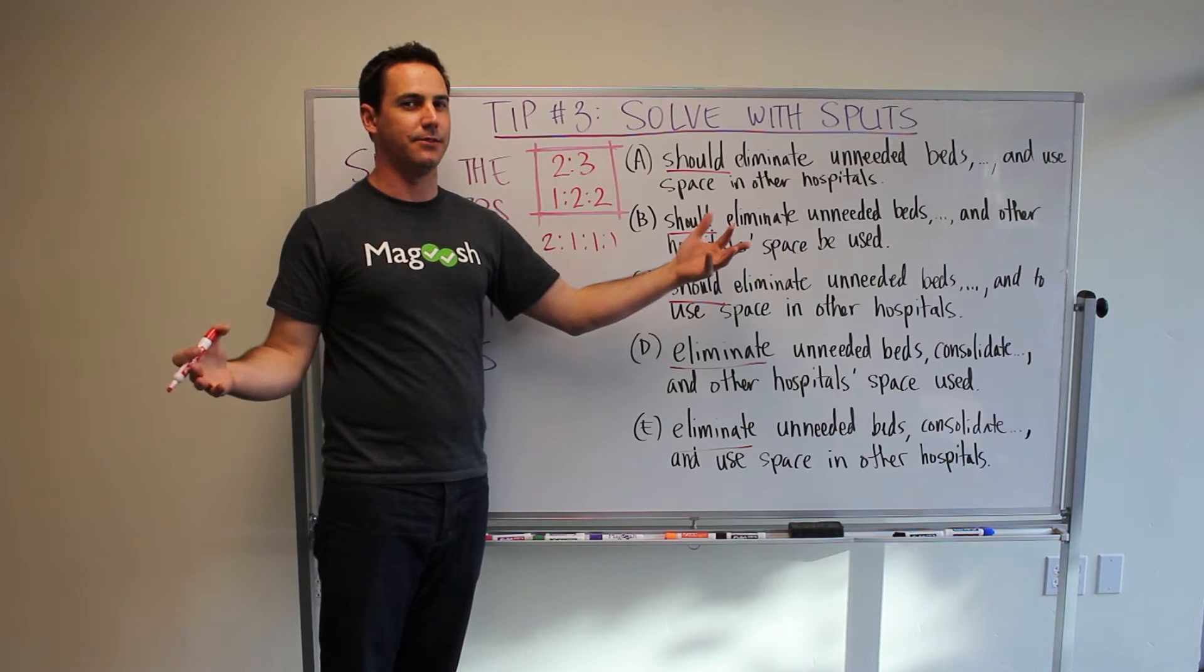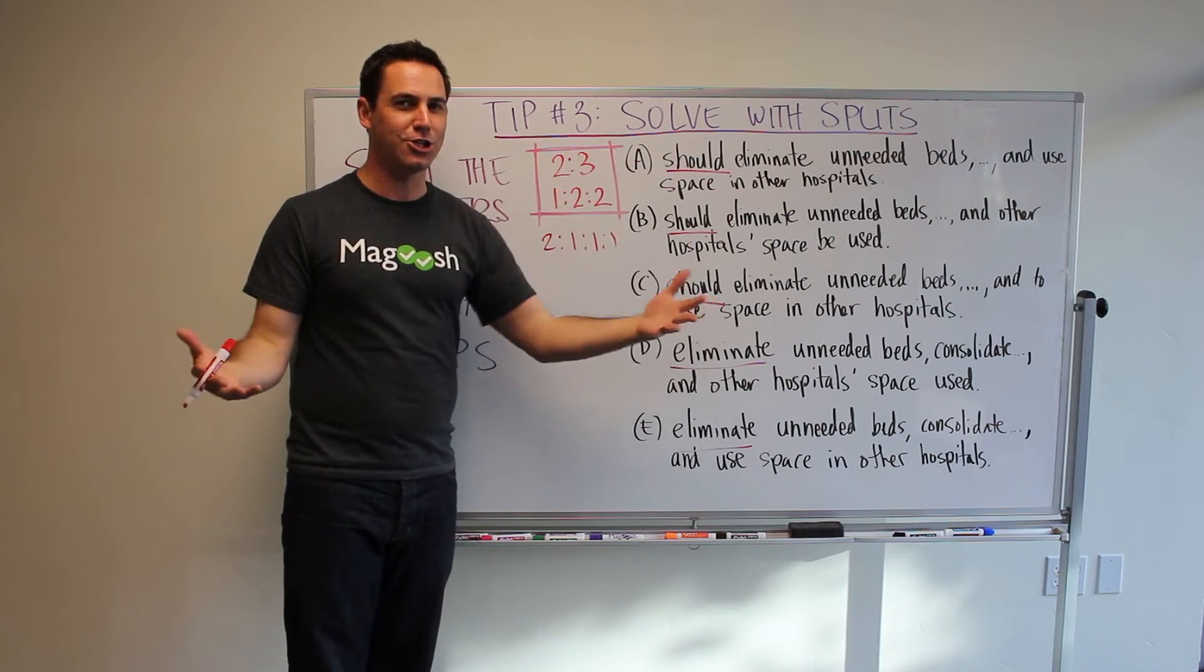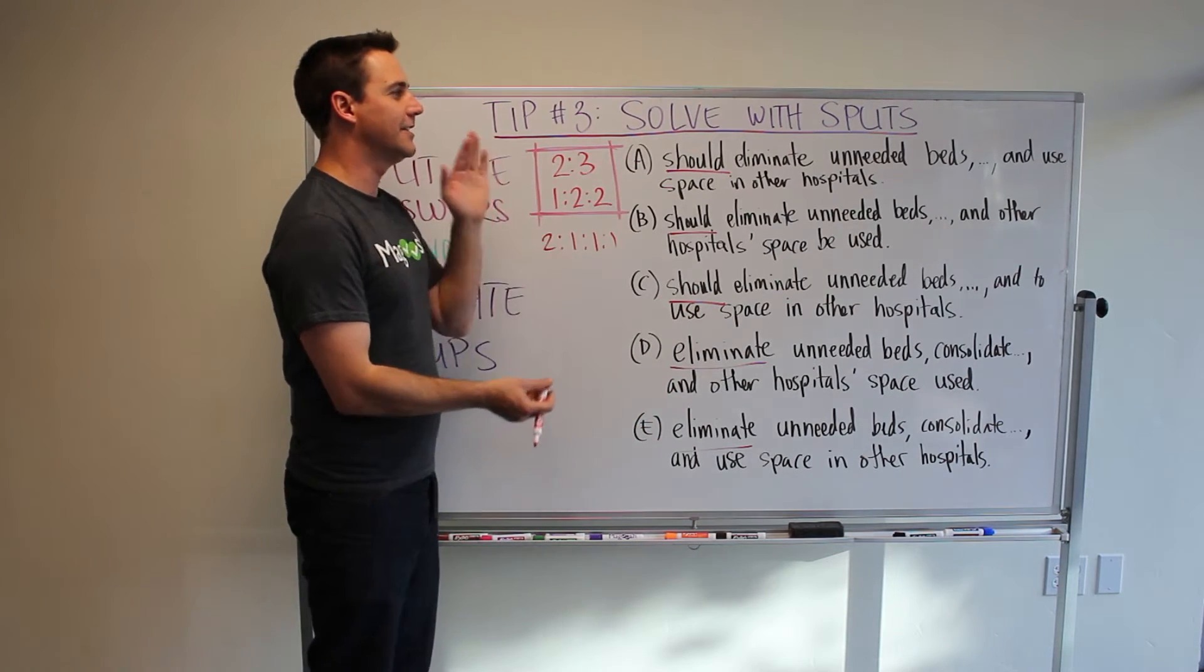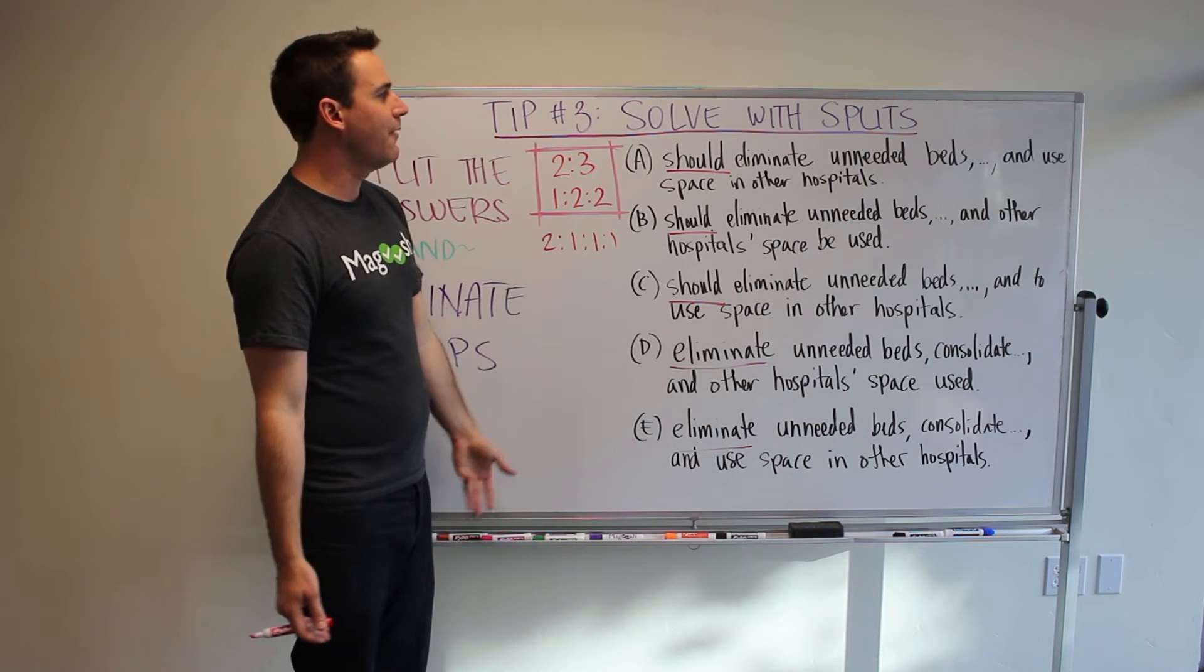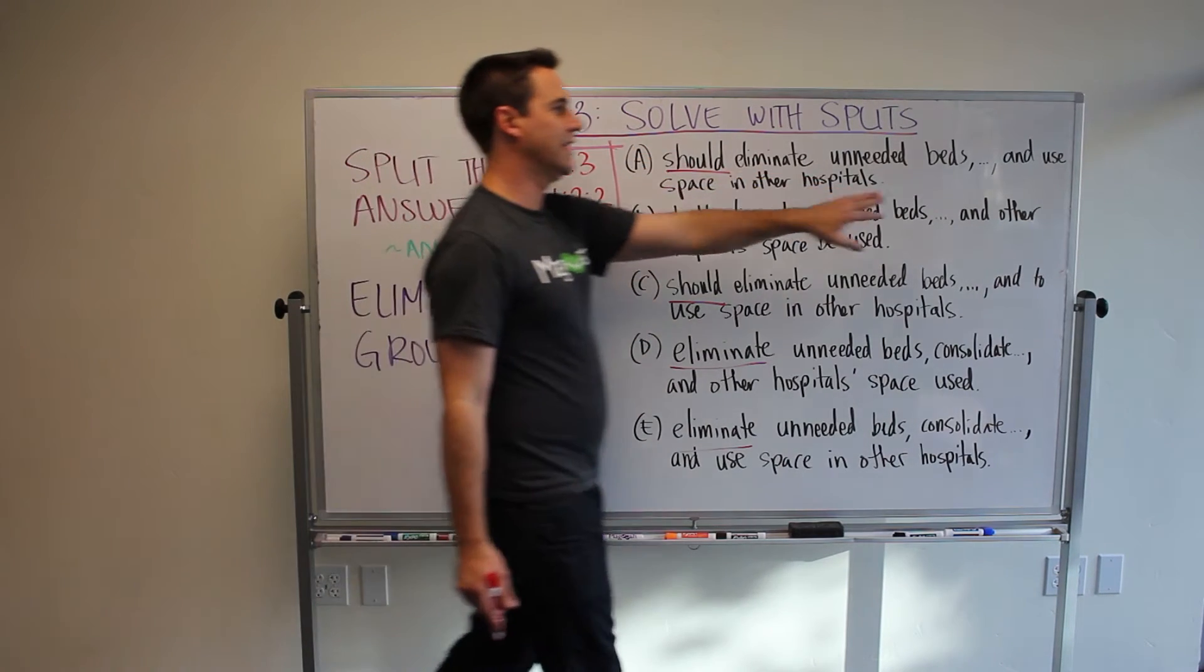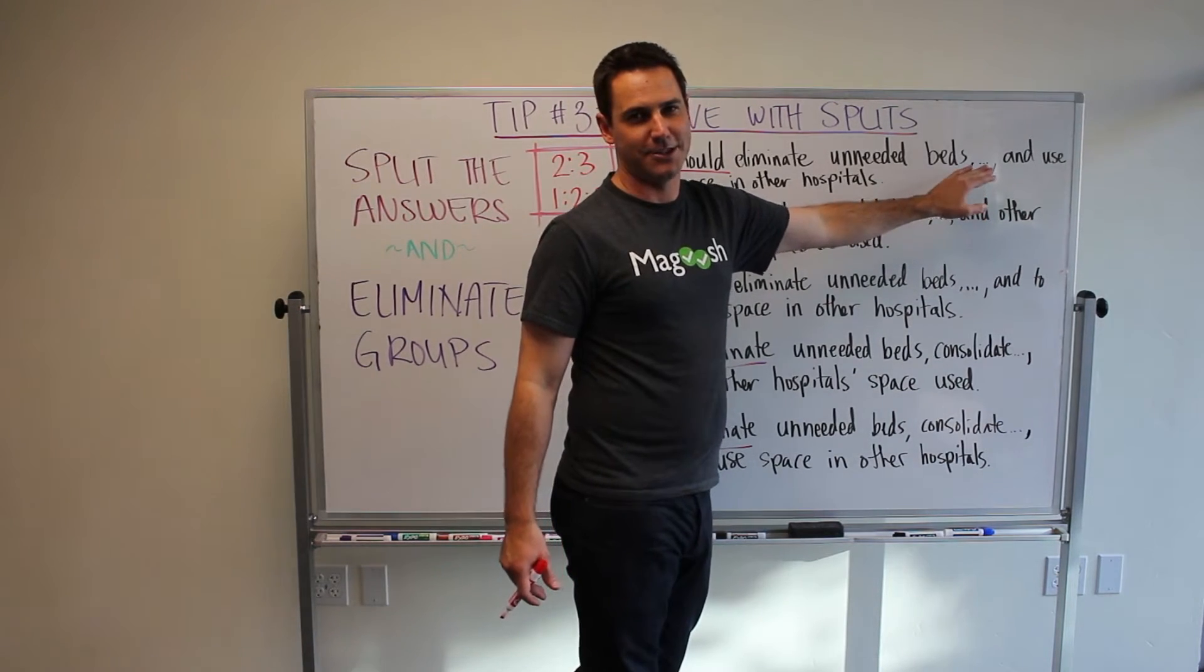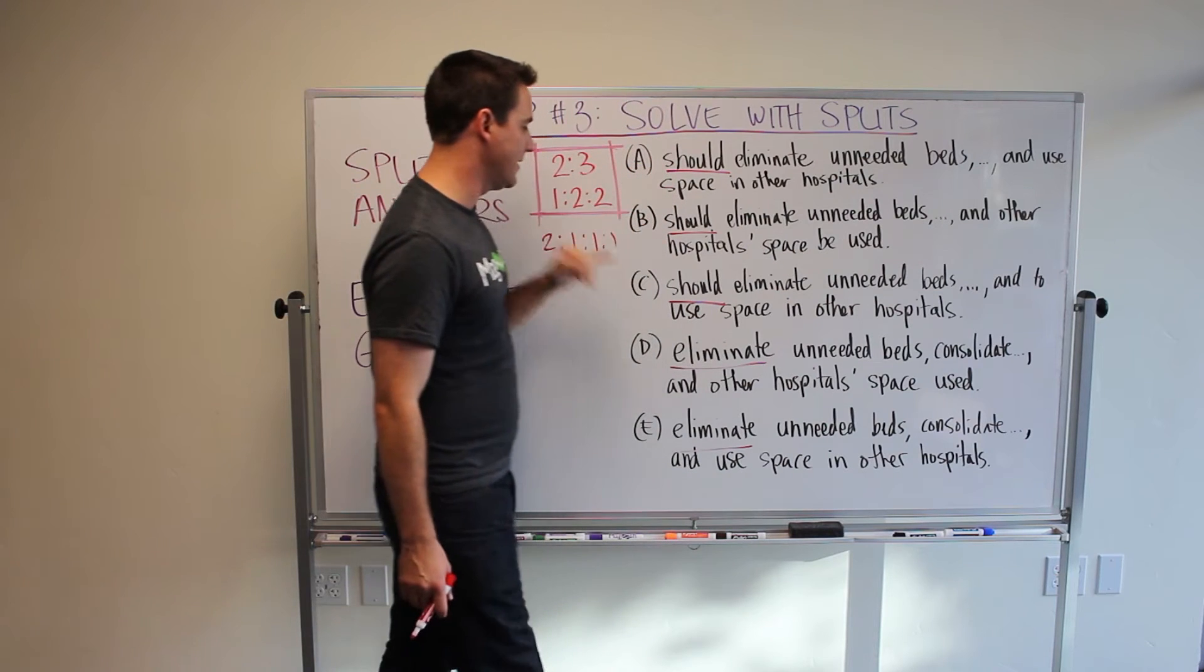What do we know about parallelism? Anyone? We know that structures have to be parallel, especially in lists. So, for example, if I'm saying should eliminate and I left out here, sorry, there's not enough space to write, but there's another should for A, B, and C.